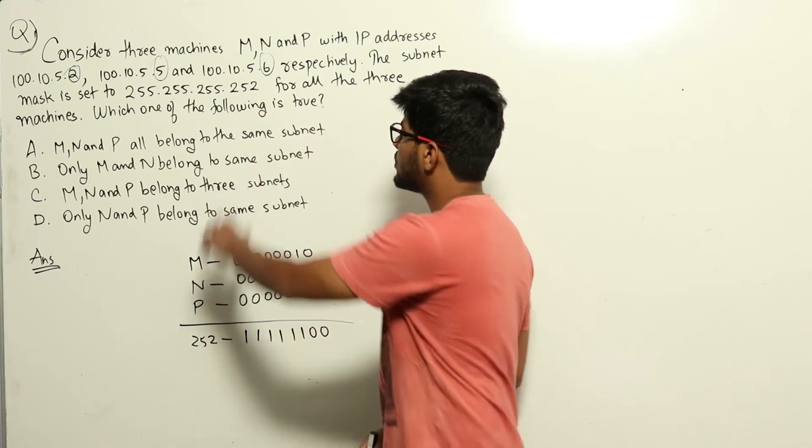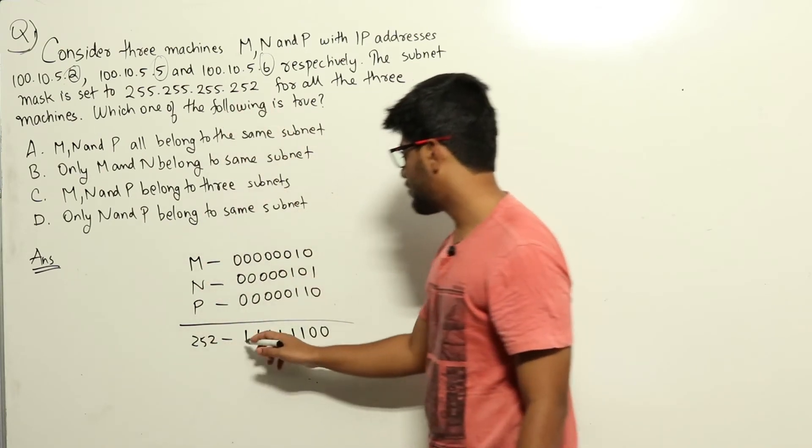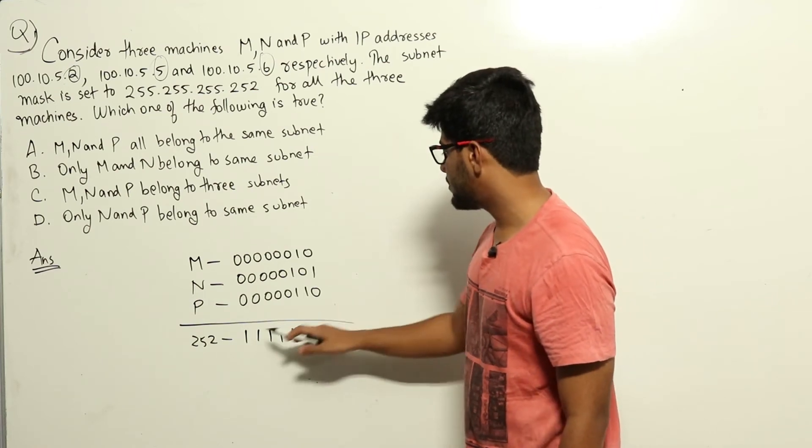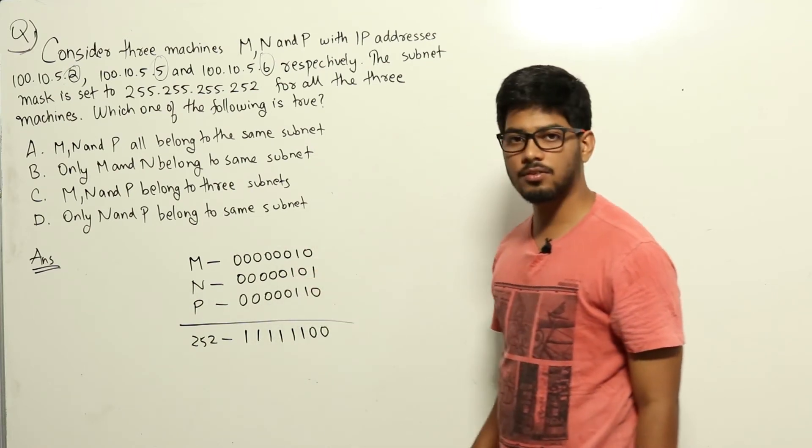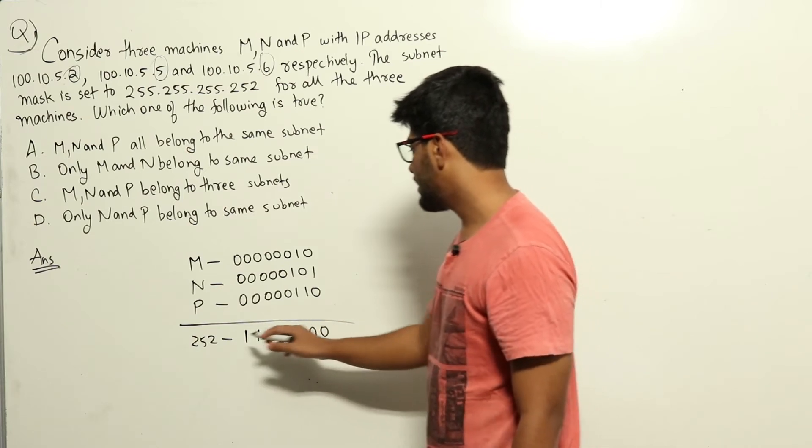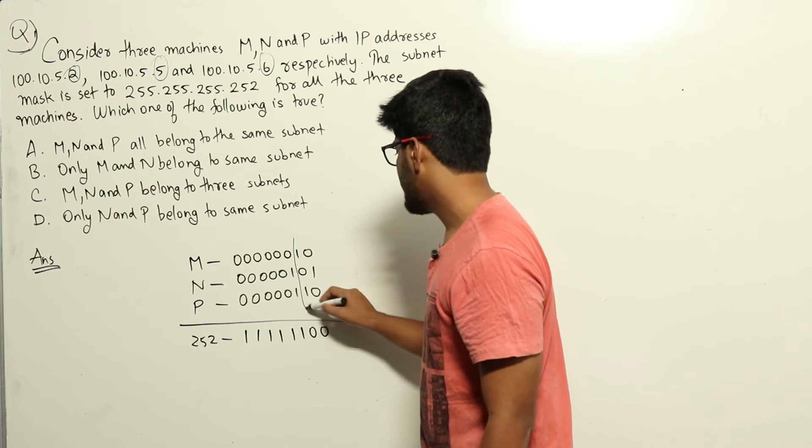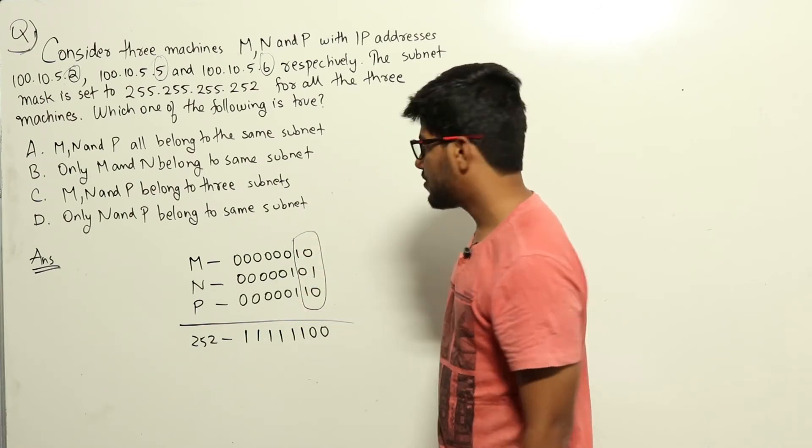Now, subnet mask is 252 for the last 8 bits, that is 11111100. We will do bitwise AND of the subnet mask with each of these and find out what we are getting. If you see, the last 2 bits of the subnet mask is 0. So this part will become 0 only for all 3, M, N and P.